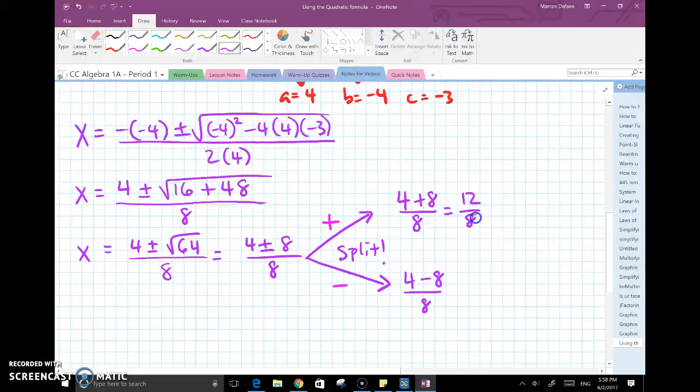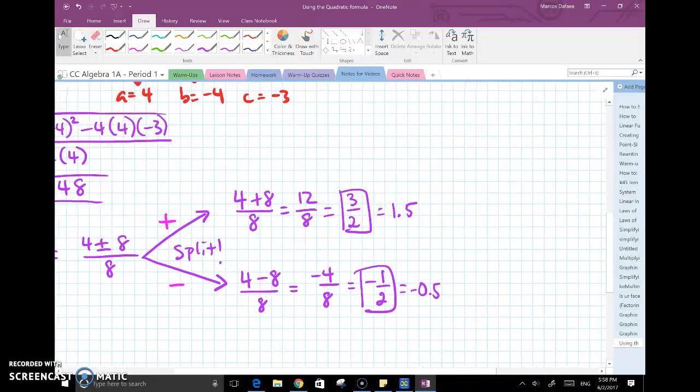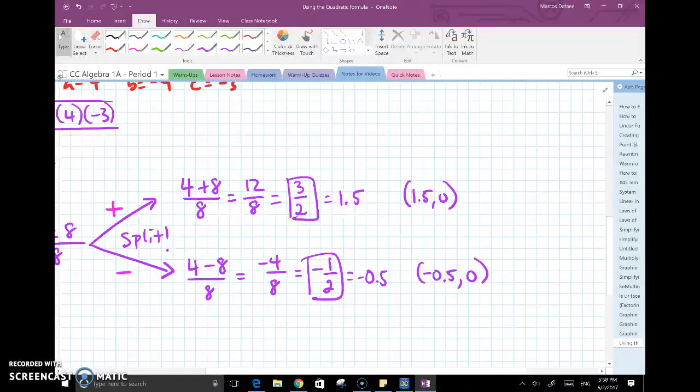This would be 12 over 8, which when reduced becomes 3 over 2, which is like 1.5. And this over here, 4 minus 8 would be negative 4 over 8, which when reduced is negative 1 half or negative 0.5. So the location of the x-intercepts for this example would be at 1.5 comma 0 and negative 0.5 comma 0. As you can see, we have two answers here, so there are two solutions to x-intercepts.